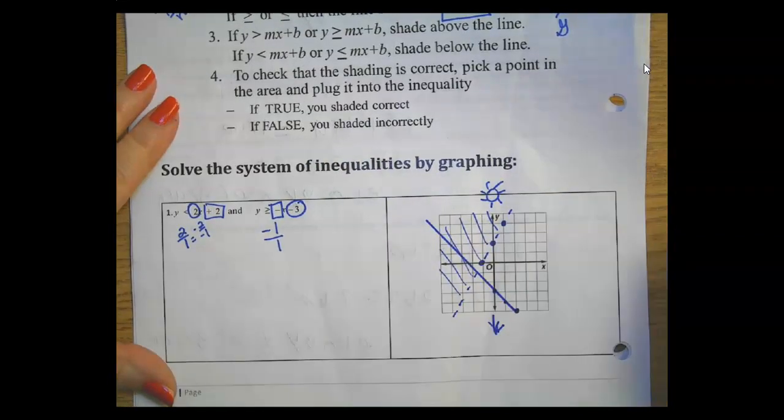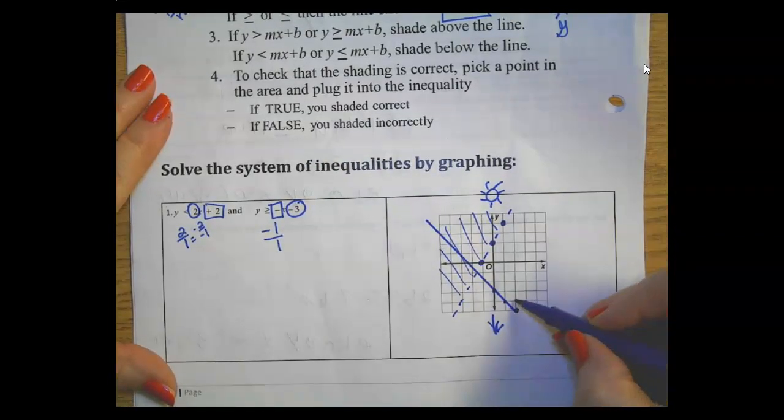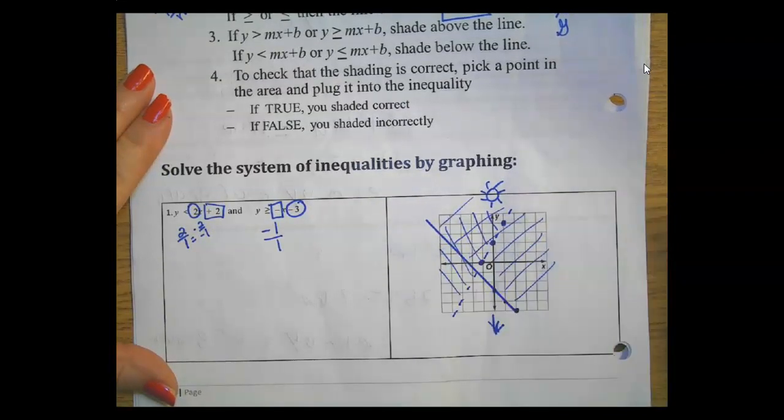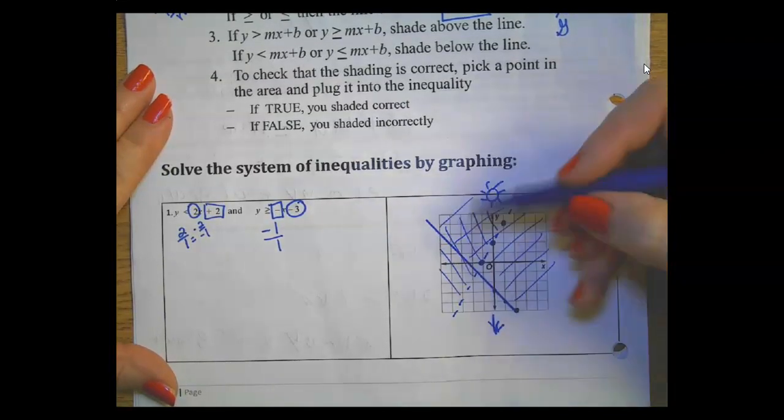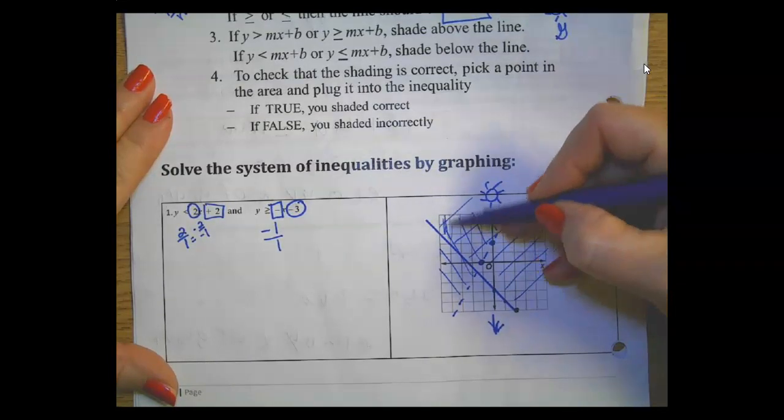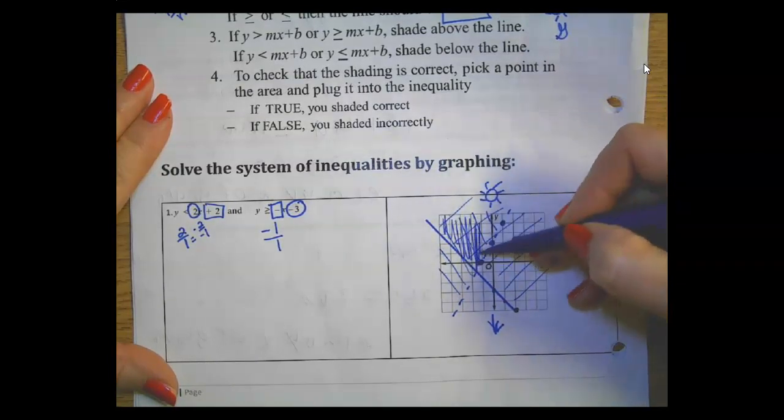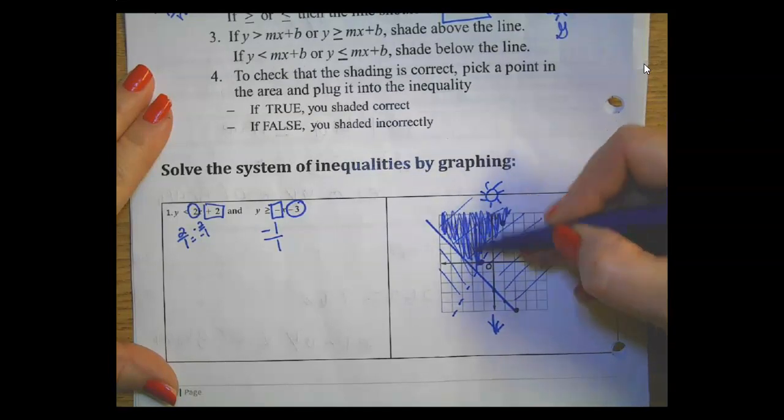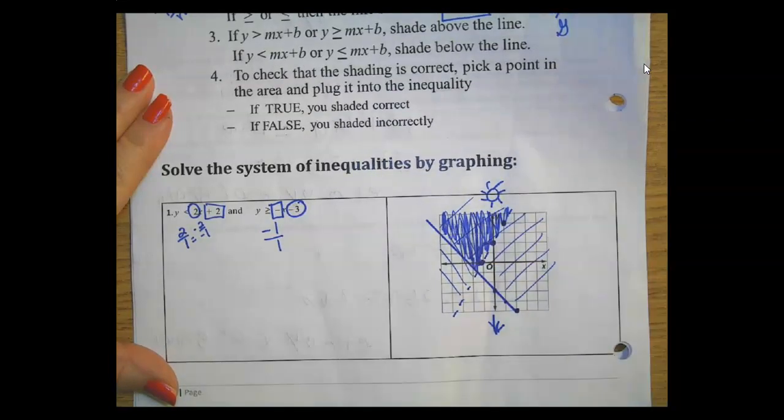And this is greater, so where's my sunshine? This way. And where do they share the shading? It's in this block right here where their shading overlaps. You can really see this on Desmos, but you need to know how to do this on your own.